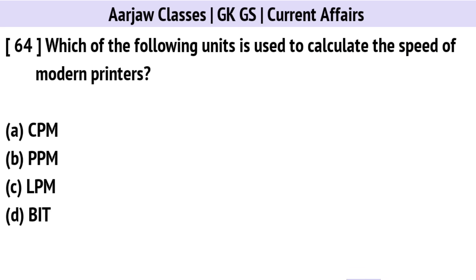Which of the following units is used to calculate the speed of modern printers? The correct option is B: PPM.